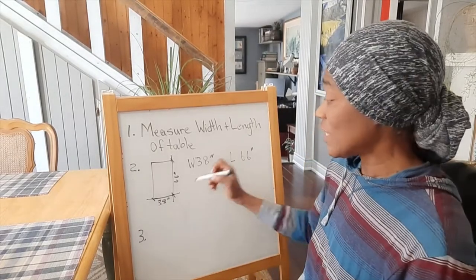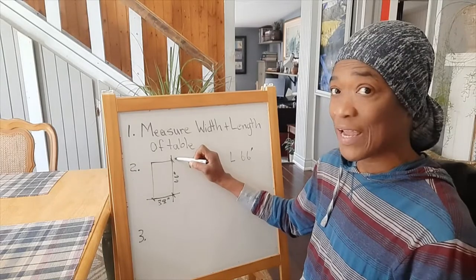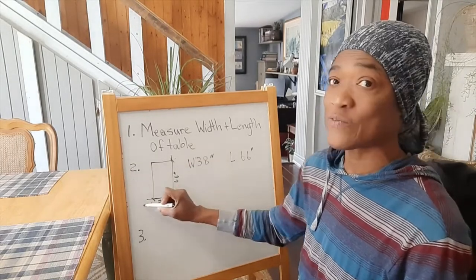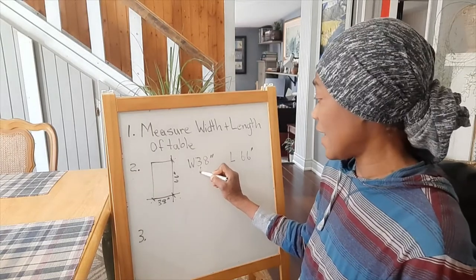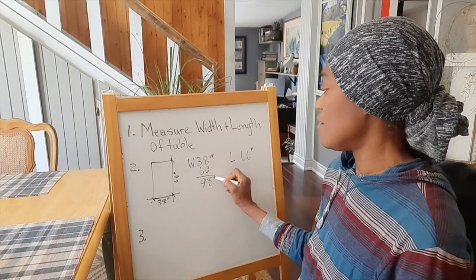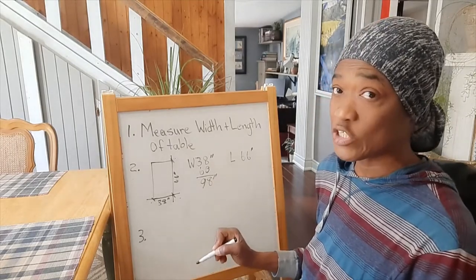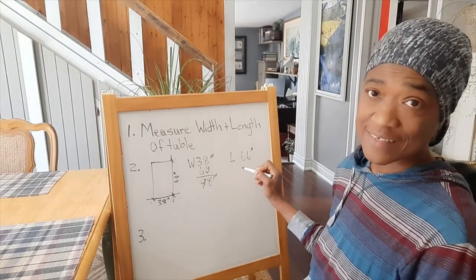We need to add an overall 60 inches for the length and 60 inches for the width. I'll add 60 inches here—that gives me 98 inches for the width. I'll also add 60 inches to the length.